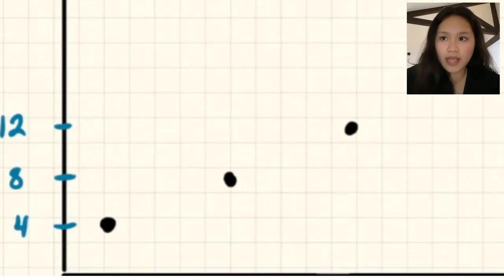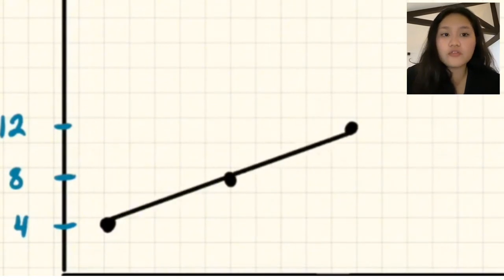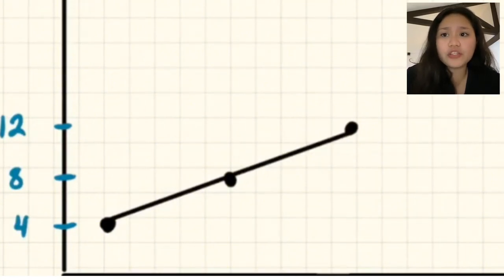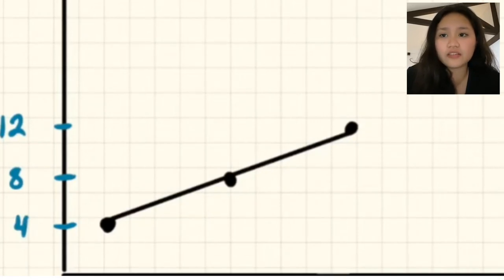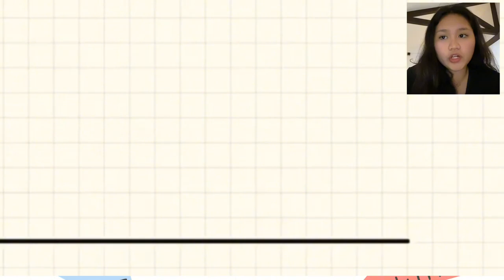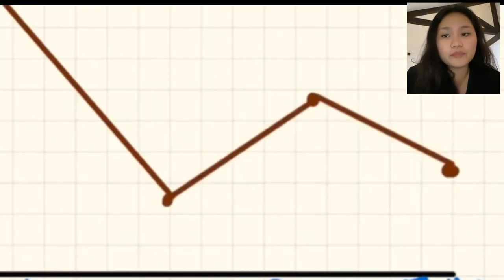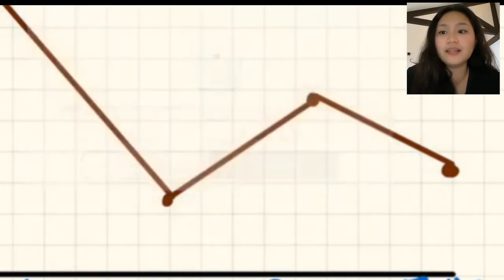A broken line graph also has a vertical and horizontal axis. The horizontal axis is usually for units of time, and the vertical axis usually displays the values of the qualitative characteristics studied. Data are recorded and represented through markers, which can be in any form, and are then connected to one another by segments to form a broken line.